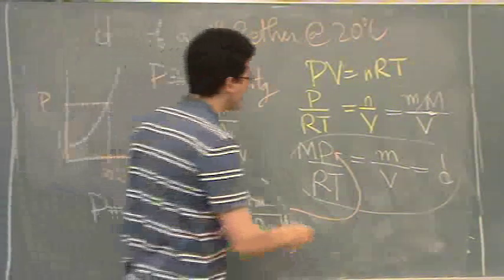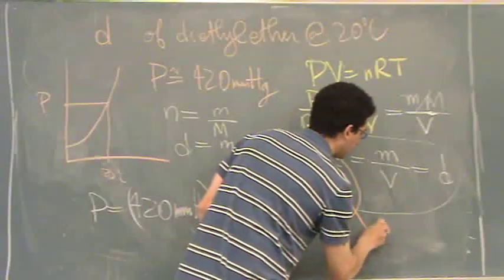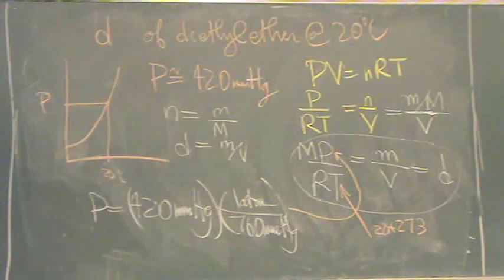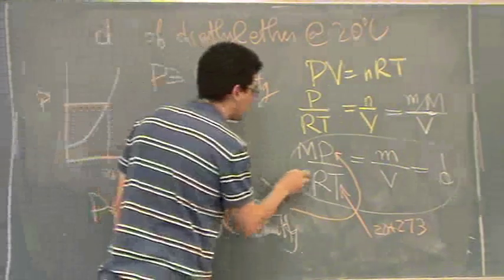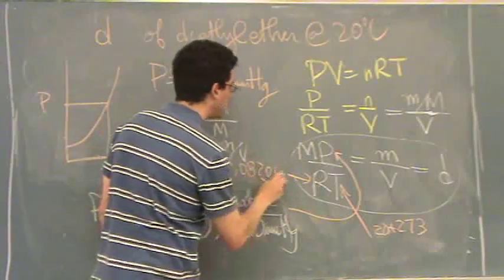Temperature, I've got that. 20 plus 273. R, that's the ideal gas constant, 0.08206.